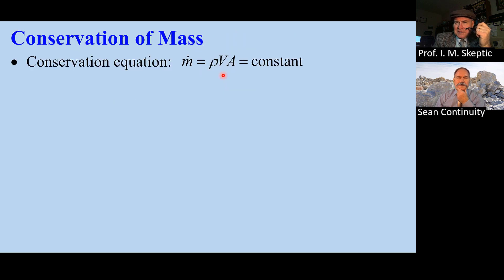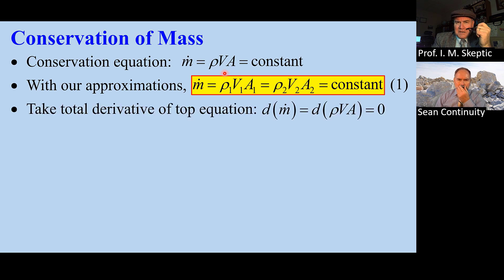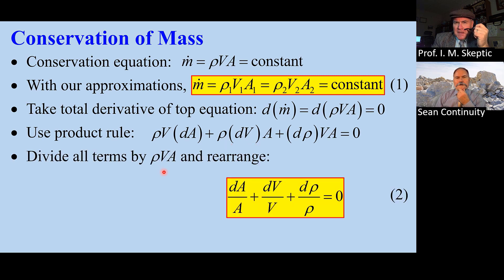and adiabatic. Conservation of mass says that ρVA is a constant—the same at the inlet and outlet. We take the total derivative of this equation, d(ρVA) = 0, and split it into three parts. When we divide by ρVA, we get equation 2: dA/A + dV/V + dρ/ρ = 0.